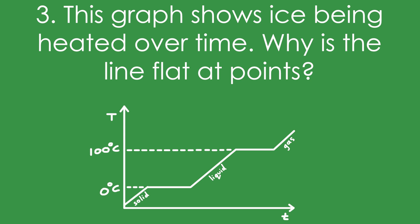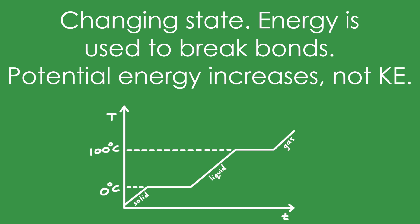Question 3: This graph shows ice being heated over time. Why is the line flat at certain points? That's because it's changing state at those points. The energy going in is used to break bonds, which means the potential energy of the particles is increasing, but not the kinetic energy. It's vice versa for the slanted bits.